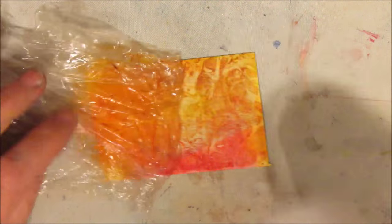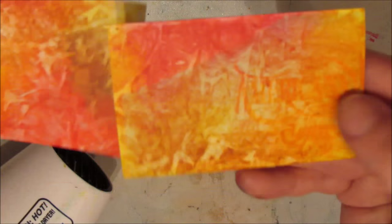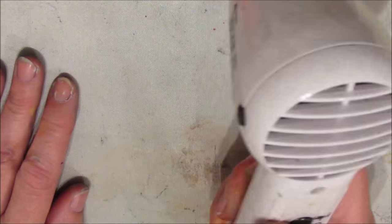This was the gelatos. It stayed a little bit wetter. But again you can see you have the texture of the plastic wrap in there. And the mixture of colors. And it's looking very lovely. So comparing the two, they look very similar. The Inktense block is a little bit more matte than the gelatos or gel sticks.